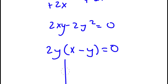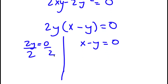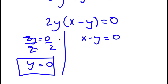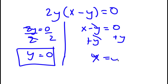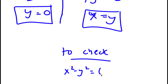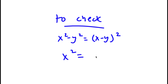This gives two equations: 2y equals 0, and x minus y equals 0. For 2y equals 0, dividing both sides by 2 gives y equals 0. For x minus y equals 0, adding y to both sides gives x equals y.